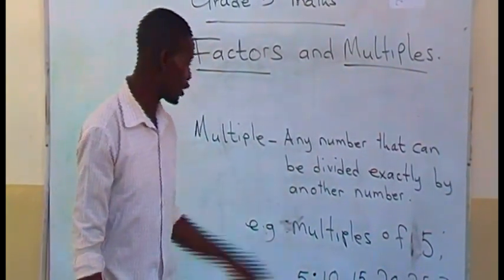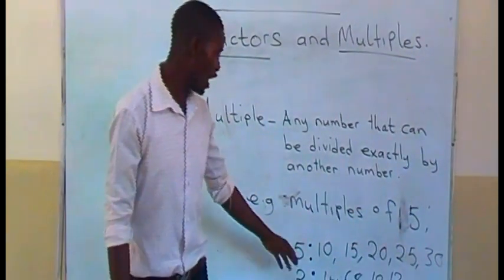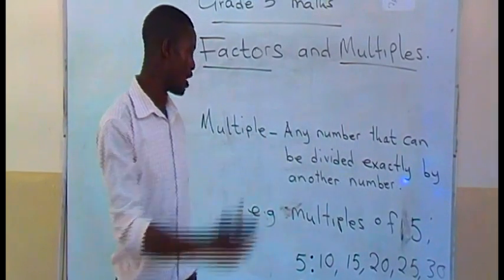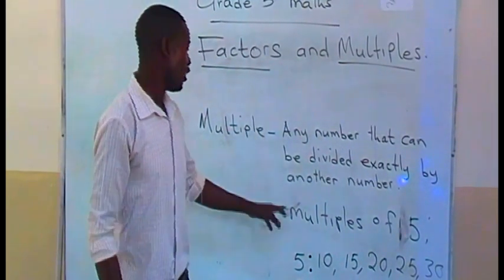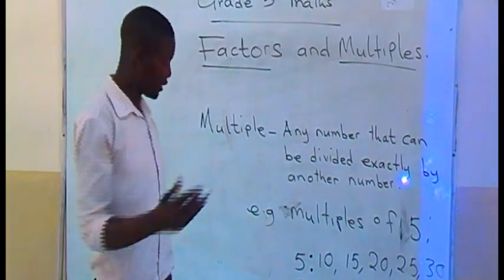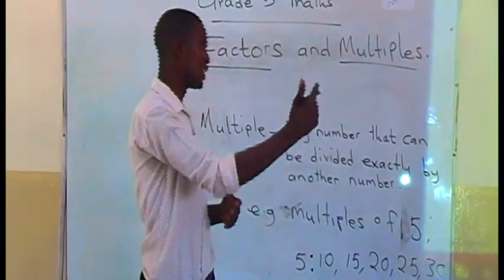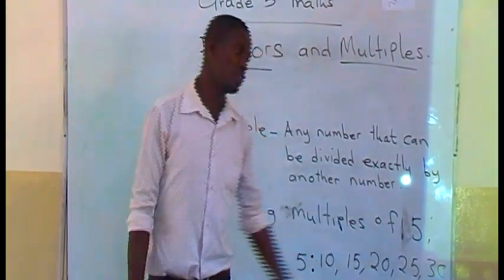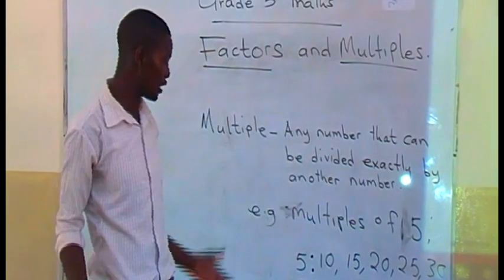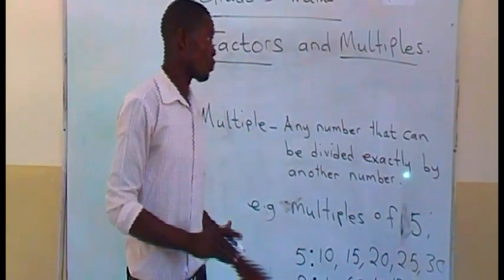In the activity, boys and girls, you are going to be given numbers, and you are going to find their multiples. You have to show your working clearly. If you are told to list the multiples of 5, list them clearly, and the numbers you are listing should be separated by commas to show the separation of numbers. If you don't include the commas, it will mean something else.